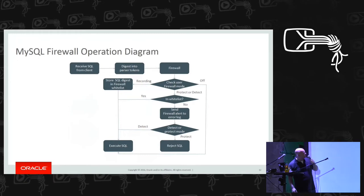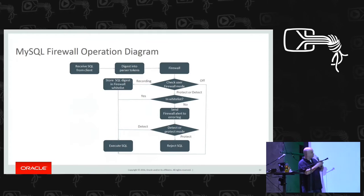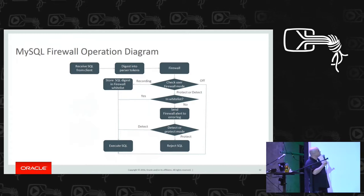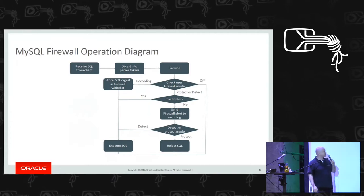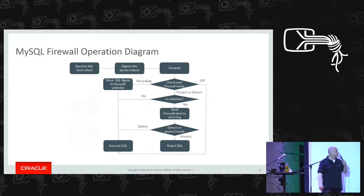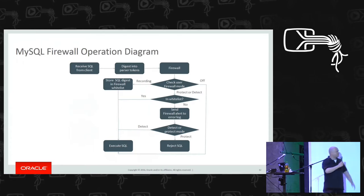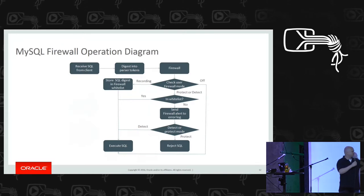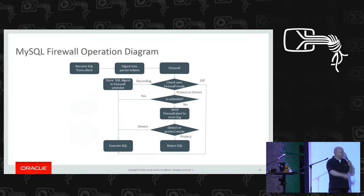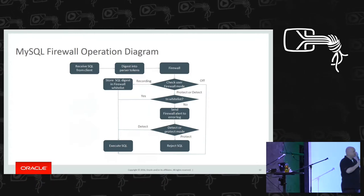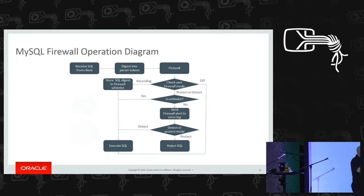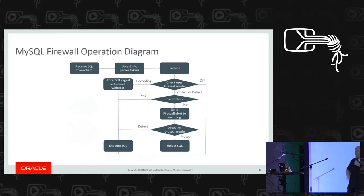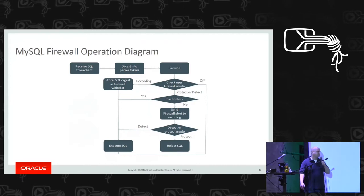Here is the full state diagram of the firewall. It receives a statement from the client, makes a digest of it, then checks if the user is in protecting or detecting mode for unknown queries. If the query is in the whitelist, it is executed. If it's not in the whitelist, it is subjected to additional measures and eventually rejected. There is also a recording mode — when the user is in recording mode, the query will still be executed but also stored into the whitelist. This is how you fill in the whitelist with queries.